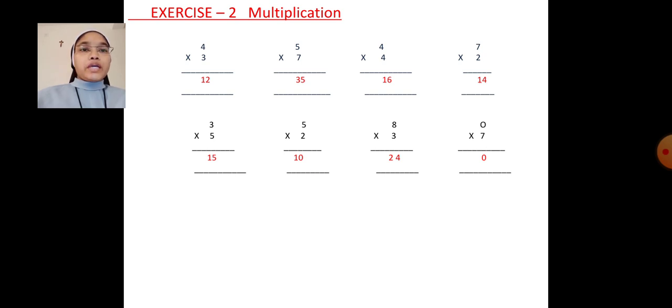5 into 2. 2 5's are 10. Next, 8 into 3. 3's table we have to say 8 times. 3 8's are 24.